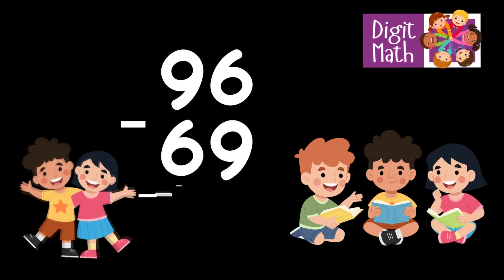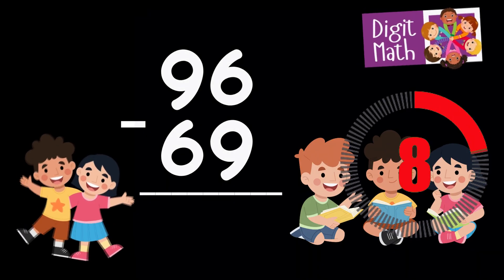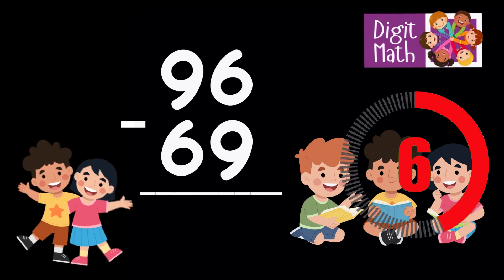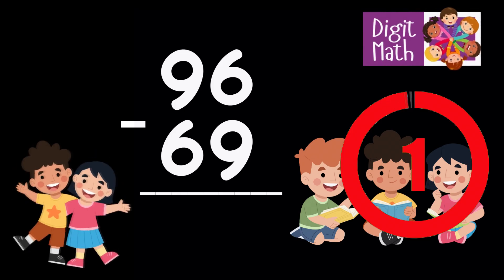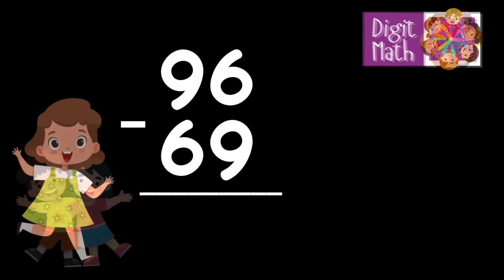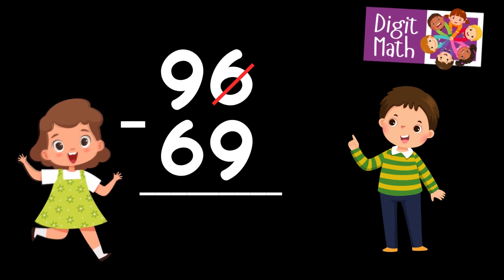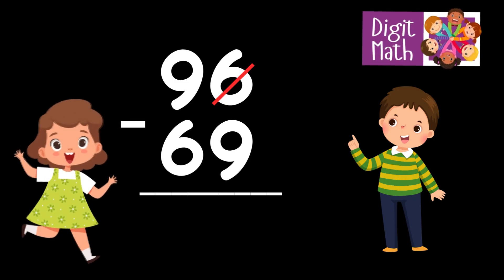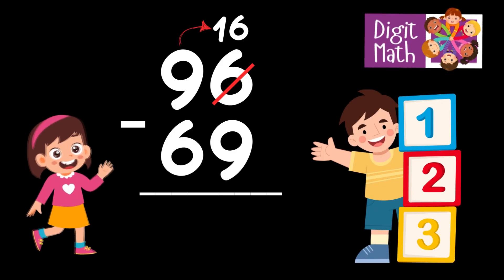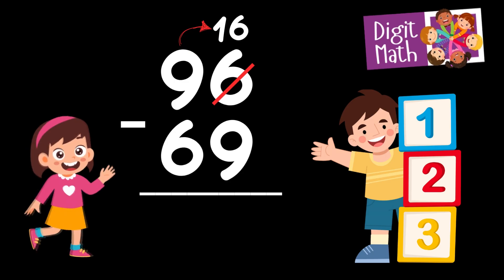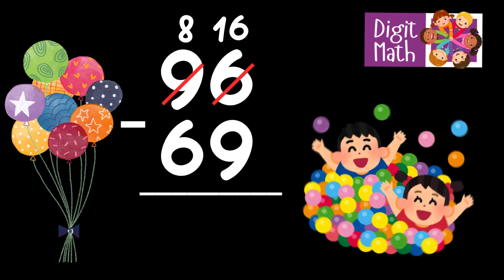96 minus 69 is... Time to think. In the Units column, we have 6 minus 9. Since it's not possible to subtract 9 from 6, we need to borrow from the Tens column. In the Tens column, we have 9. We take 1 from the Tens, leaving 8 in the Tens column and turning the Units column into 16.